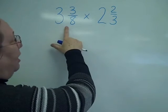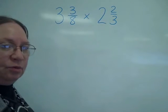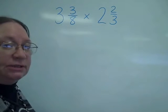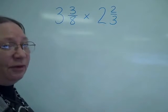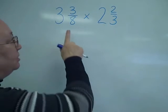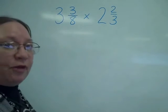We're going to have 3 and 3 eighths times 2 and 2 thirds. Because the rule for multiplying fractions says multiply the tops, multiply the bottoms, the very first thing we have to do is change that mixed number to an improper fraction.